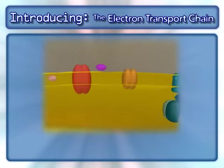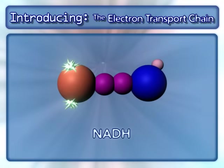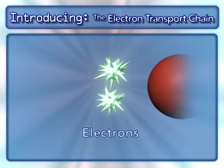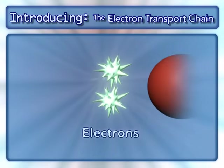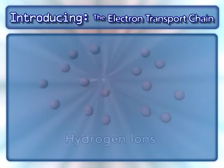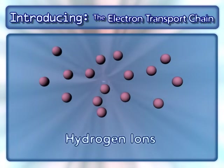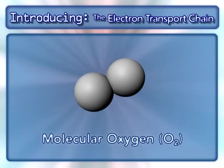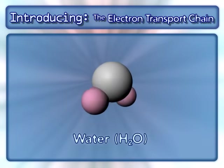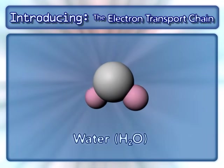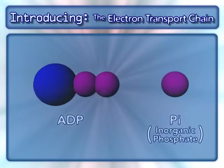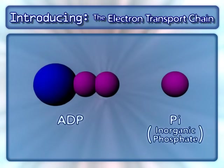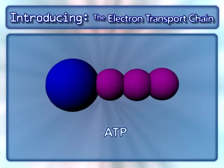Other key components in this process are NADH and the electrons from it, hydrogen ions, molecular oxygen, water, and ADP and inorganic phosphate, which combine to form ATP.